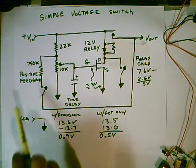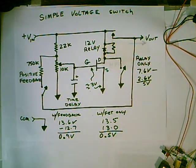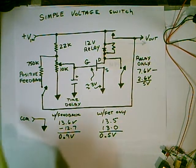This is about 0.9 volts with 750 K. You could lower that and get a wider range. A lot of experimenting you can do around here.